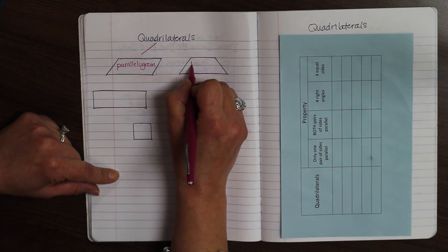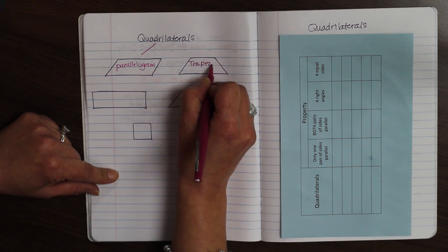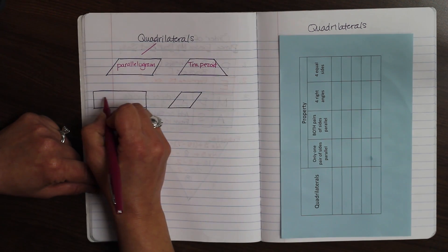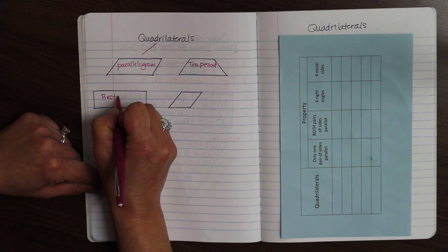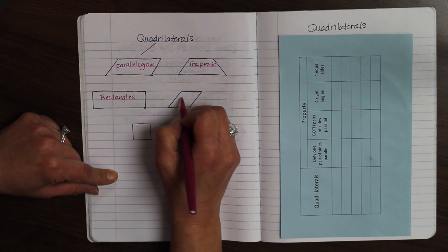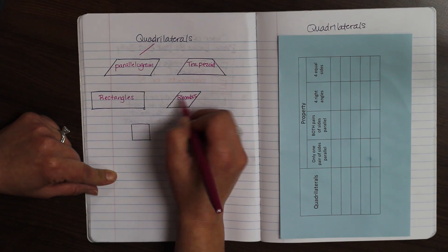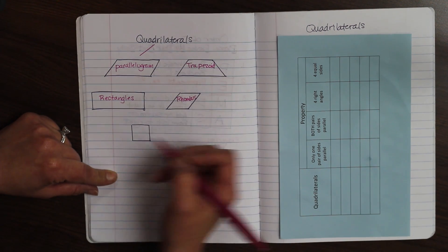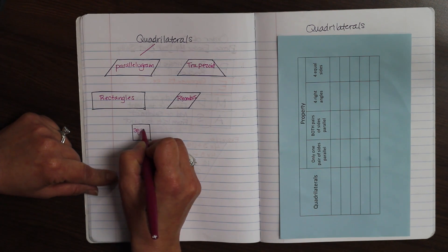The other one I have is a trapezoid. I'm also going to talk about rectangles, rhombus. Remember, rhombus looks like a square hit by a bus. That's a good way to remember it. And a square.